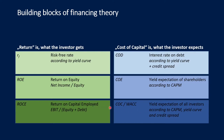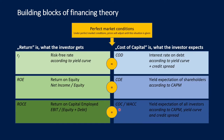If ROCE exceeds WACC, we expect the company creates value. If ROCE falls below WACC, we expect the company destroys value. Now, what does the perfect market condition imply here? The perfect market condition means that, given a market equilibrium, all these measures should equalize.